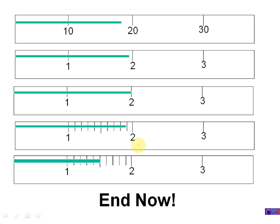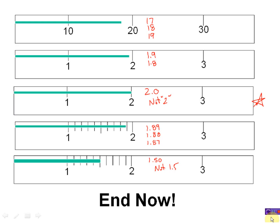Press pause and write your answers for these practice problems — the hardest one is the last ruler. Here are my answers: first problem, 17, 18, or 19 are all acceptable. Second problem, 1.9 or 1.8 — I'd favor 1.9 as the better answer. Remember: if you only write down one digit, that digit is your only guess, meaning you're not even sure if it's that value. If there's a tick mark on the 2, you know for certain it's 2, so you must write 2.0. Over here I'm calling it 1.89, 1.88, or 1.87 — any of those is good.